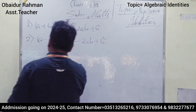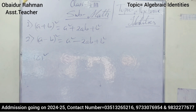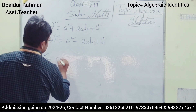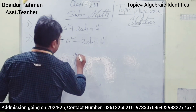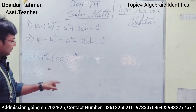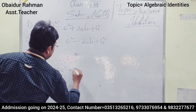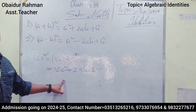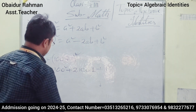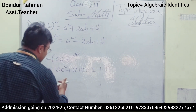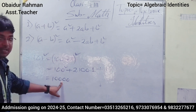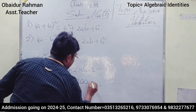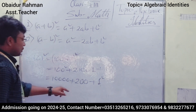Now, how to use and apply these identities. Suppose we want to find 101². We write 101 as (100 + 1)², so a = 100 and b = 1. Applying the identity: 100² + 2 × 100 × 1 + 1² = 10000 + 200 + 1.